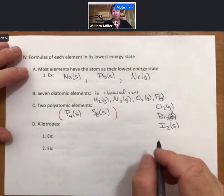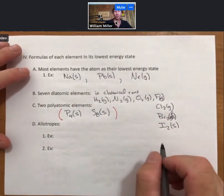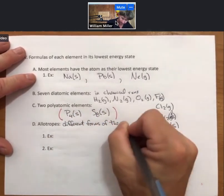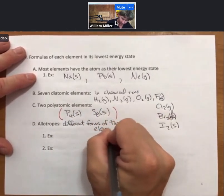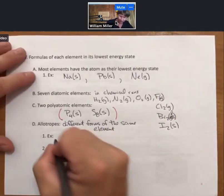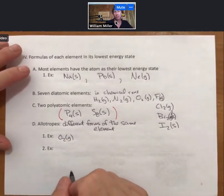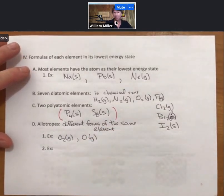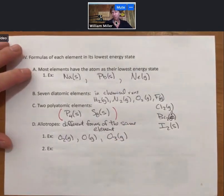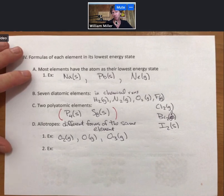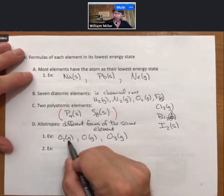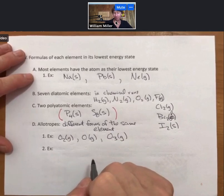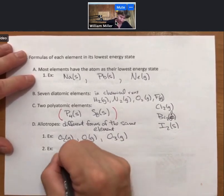Now, allotropes. Allotropes are different forms of the same element. For example, I think the popular one is oxygen. There are other versions of oxygen. There's also just the oxygen atom, which is not very stable, and ozone with the formula O3. Those are three allotropes of the element oxygen. The most stable of which is O2 gas. That's the one that you will write in chemical reactions, although you will see from time to time other versions of oxygen.